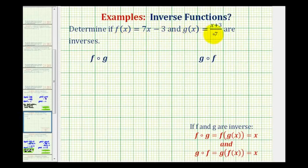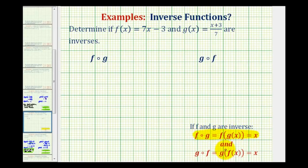We want to determine if the two given functions are inverses of one another. Remember, inverse functions are two functions that undo each other. So to show if two functions are inverses of one another, we have to show that f of g of x is equal to x, and also that g of f of x is equal to x. This is a way of verifying that for every input, the two functions will undo each other.